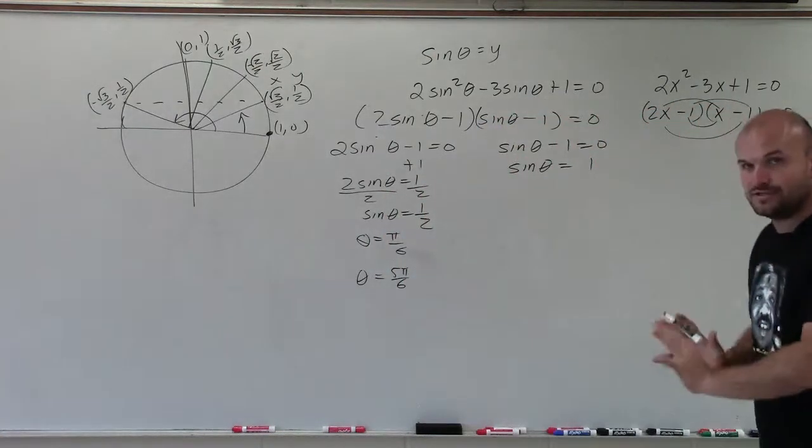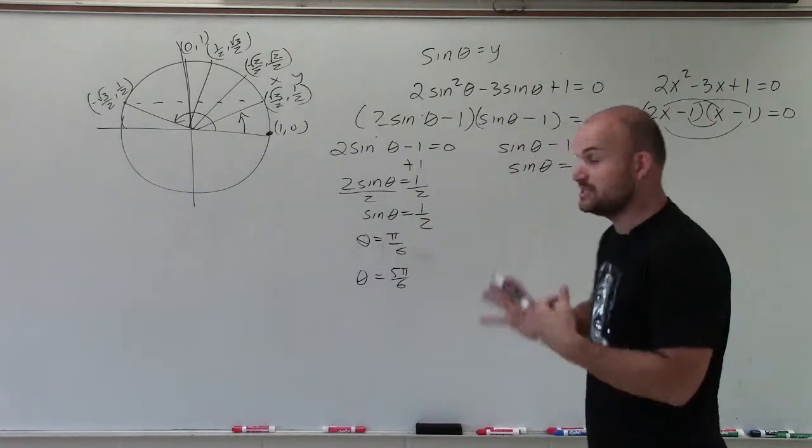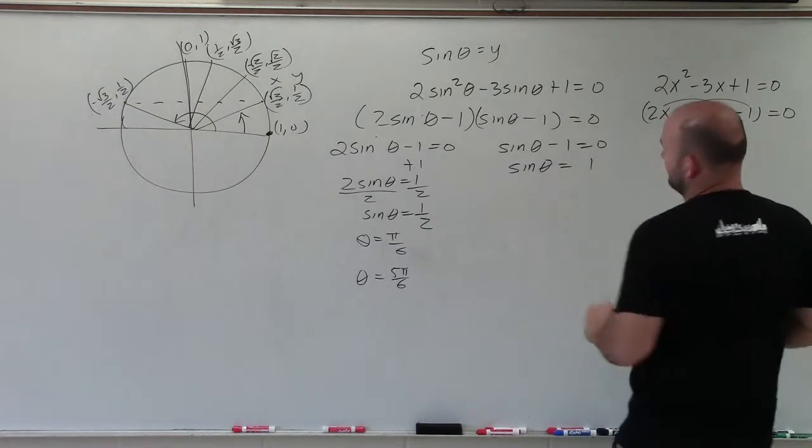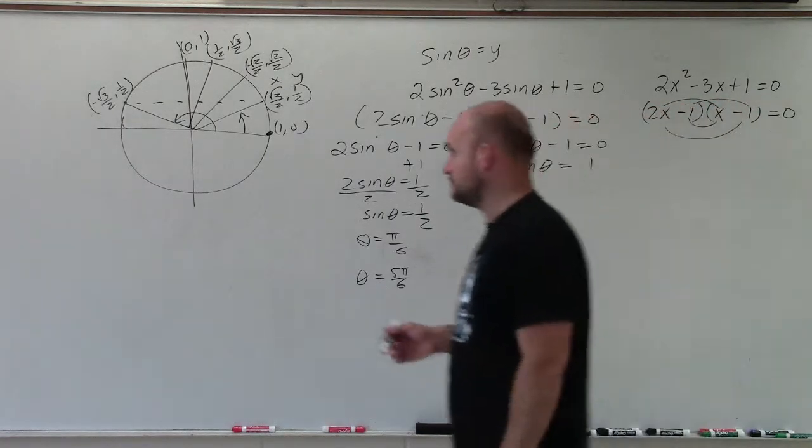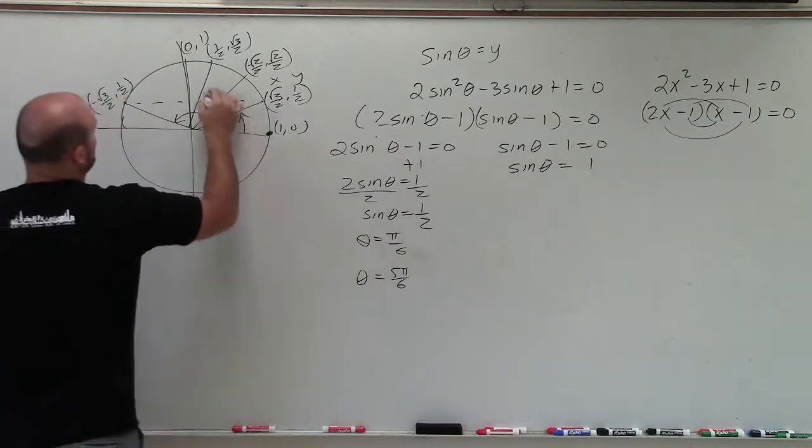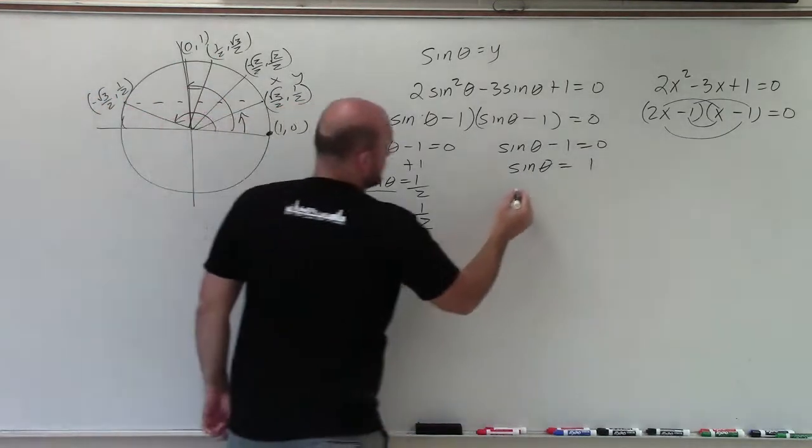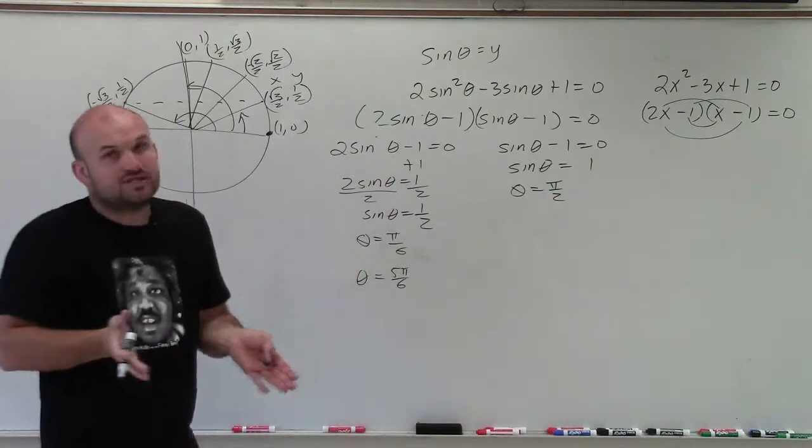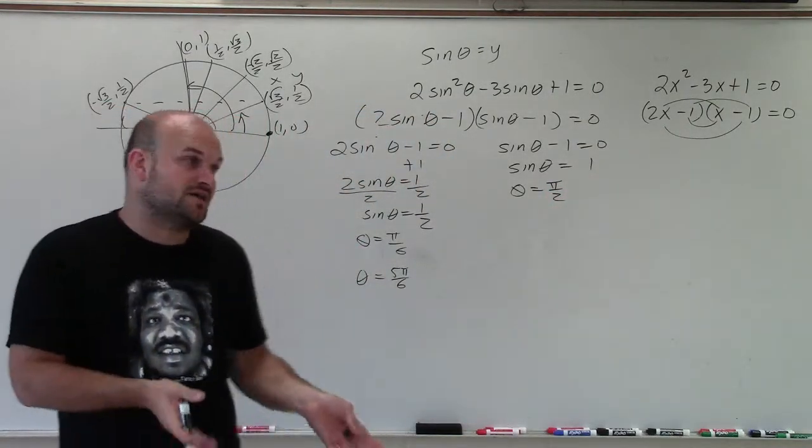And I'll get to finding all the solutions in a second. I'm just going to find all the solutions in the first quadrant first. Now let's determine when is sine of theta equal to 1. Well, sine of theta is equal to 1 right here, which is the angle pi halves. So these would be all the solutions in the first quadrant.